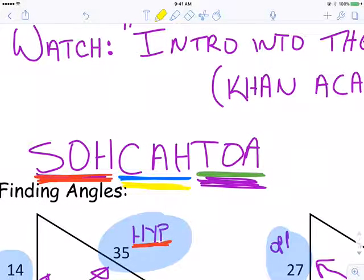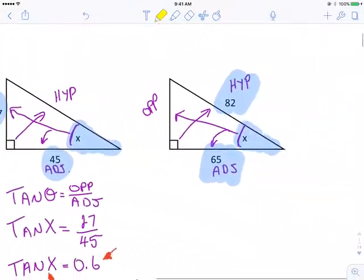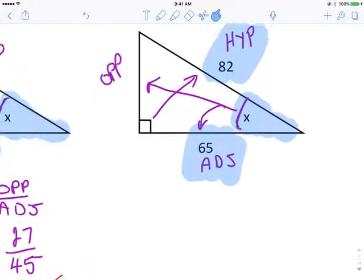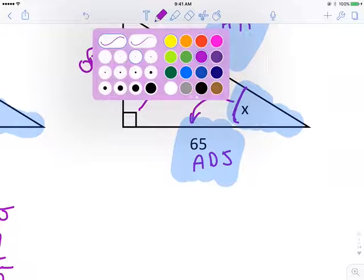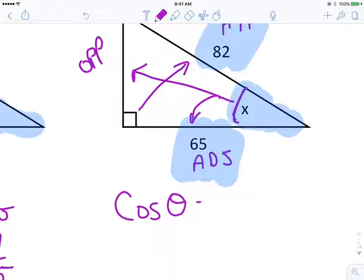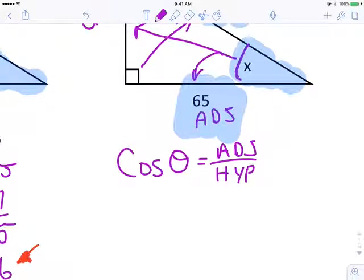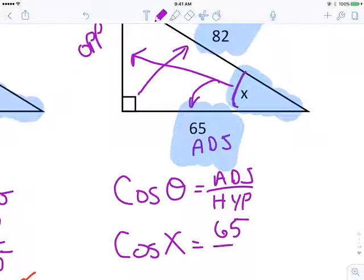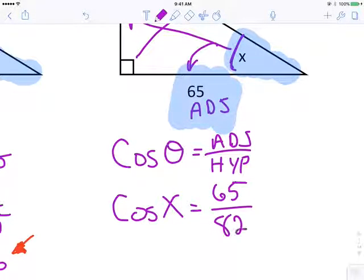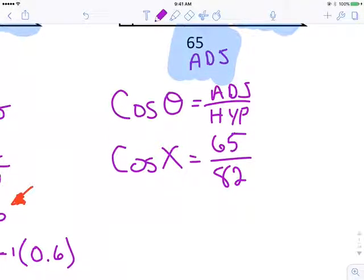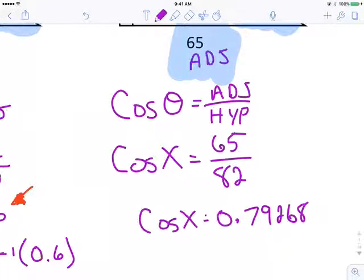Cosine. Cosine is equal to adjacent over hypotenuse. I know what trig function I'm using. Cosine. Cosine of an angle is equal to adjacent over hypotenuse. I know I'm finding angle x. Cosine x is equal to my adjacent side is 65 over my hypotenuse is 82. This works out to a decimal number. Cosine x is equal to 0.7926896.